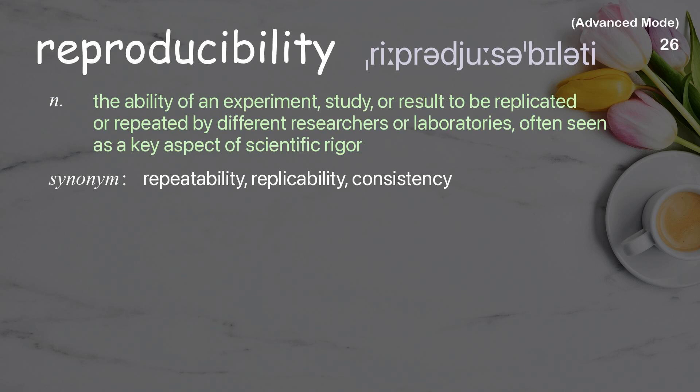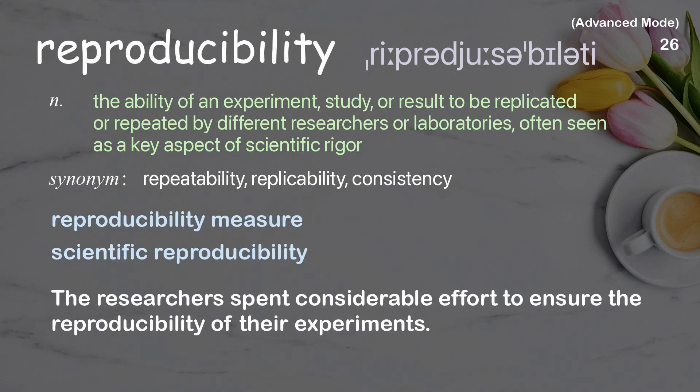Reproducibility: The ability of an experiment, study, or result to be replicated or repeated by different researchers or laboratories, often seen as a key aspect of scientific rigor. The researchers spent considerable effort to ensure the reproducibility of their experiments.